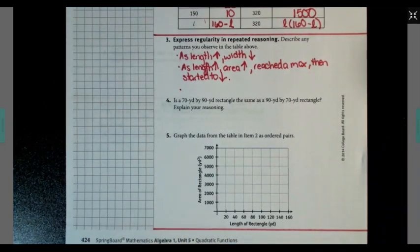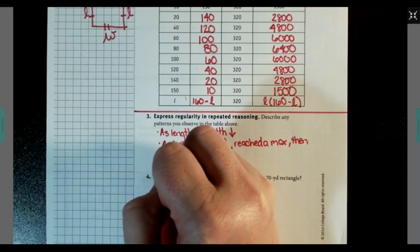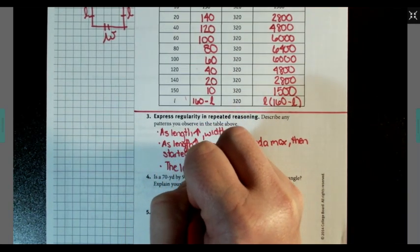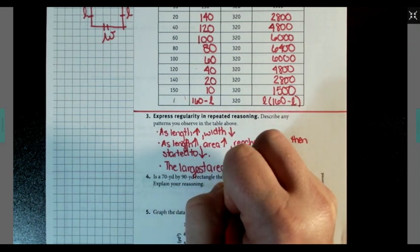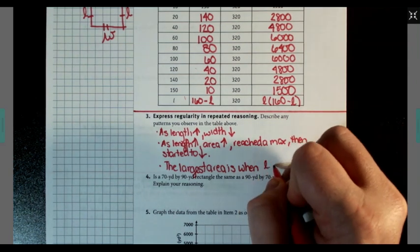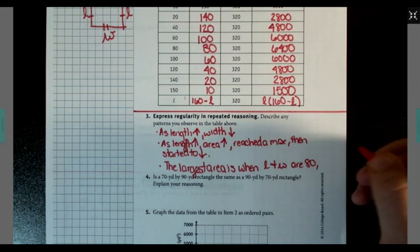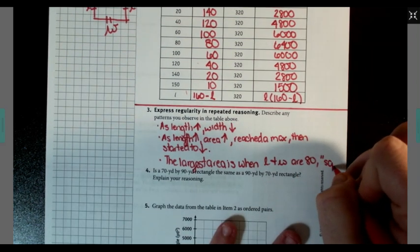Alright. Seems like the largest area comes from when the box is an 80 by 80, which is a square. The largest area is when length and width are 80, resulting in a square.